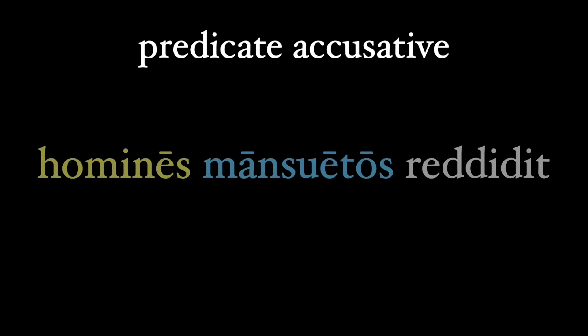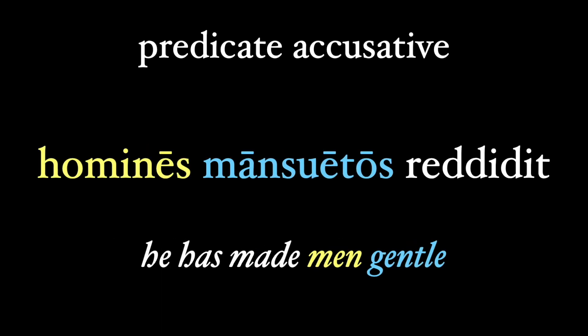The predicate accusative can also be an adjective, as in this example. Homines mansuetos reddidit — he has made men gentle. Our predicate accusative is the adjective mansuetos, and notice that the translation of the adjective comes after the direct object accusative, rather than before.